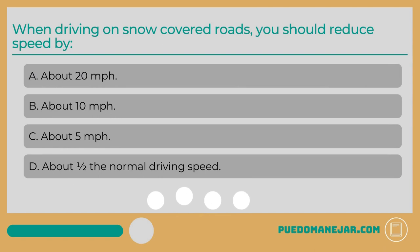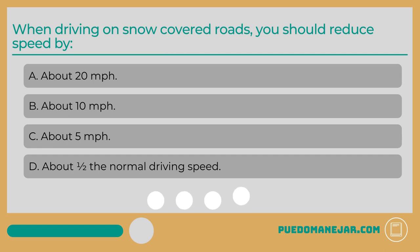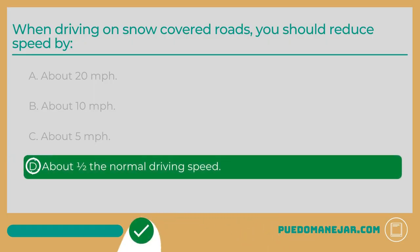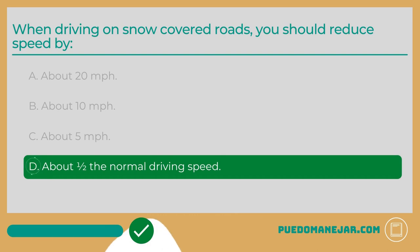When driving on snow-covered roads, you should reduce speed by: A: about 20 miles per hour. B: about 10 miles per hour. C: about five miles per hour. D: about one half the normal driving speed. The answer is D: about one half the normal driving speed.